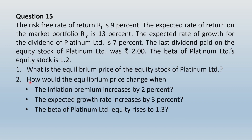The second part of the question asks: how would the equilibrium price change when the inflation premium increases by 2%, the expected growth rate increases by 3%, and the beta of Platinum Limited equity rises to 1.3? We are going to evaluate the cumulative effect of these three changes on the equilibrium price.